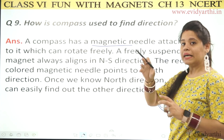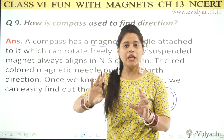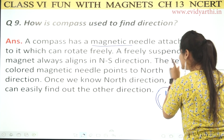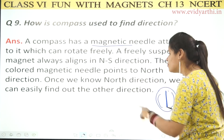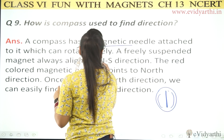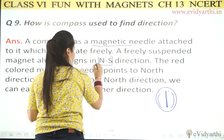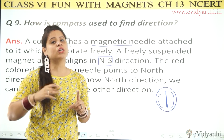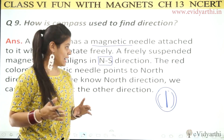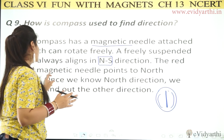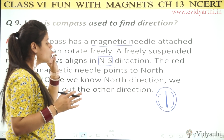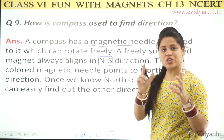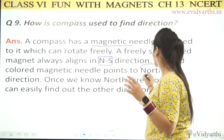If you look at this compass, the needle can rotate freely. A freely suspended magnet always aligns in the north-south direction. The red-colored magnetic needle points to the north direction — so the red part indicates north.